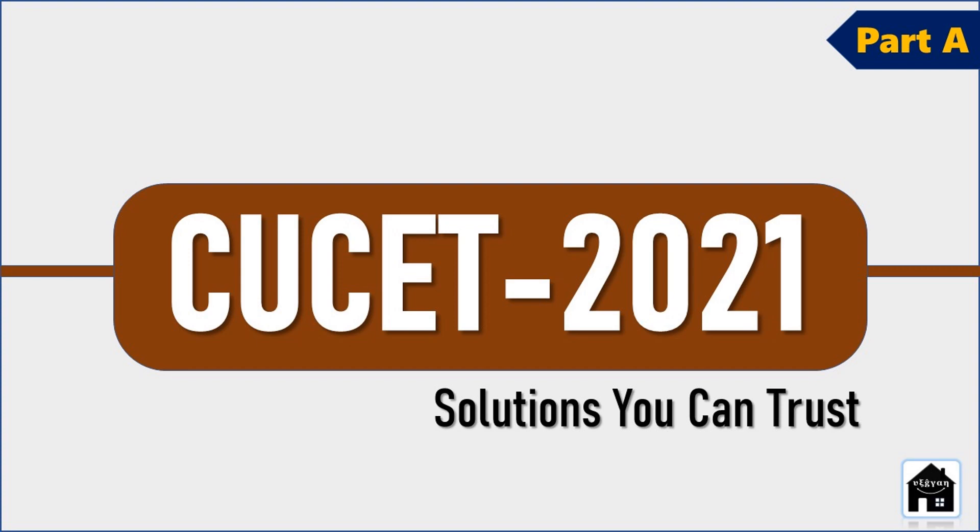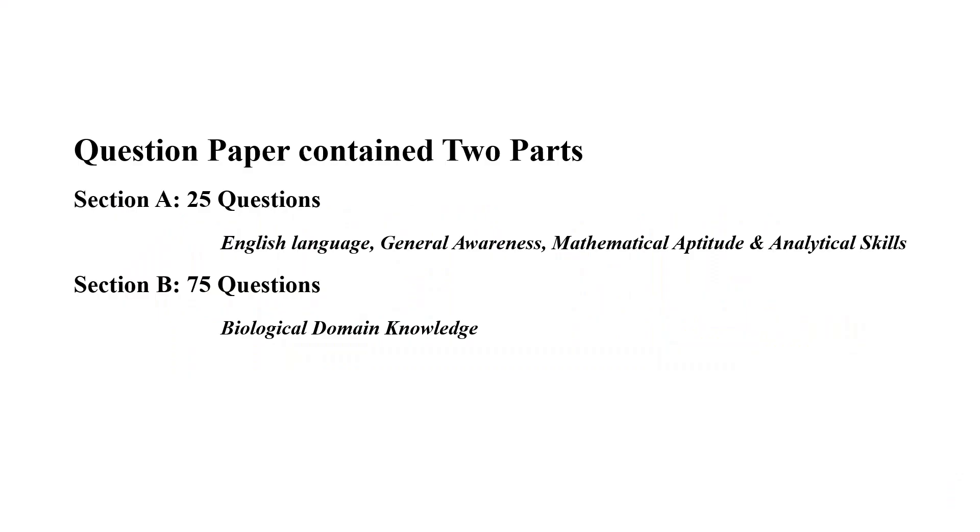Hello friends, as you know, CIUSET is in news and hopefully by the next year all major central universities will be under CIUSET. So it's a good time to look at it. A typical CIUSET paper contains two parts: part A which contains 25 questions pertaining to English language, general awareness, mathematical aptitude and analytical skills, while section B contains 75 questions depending on your domain. Here we are going to discuss the MSc Life Science CIUSET paper 2021. So let's begin.